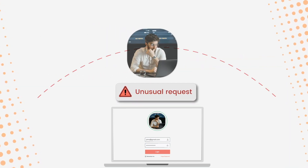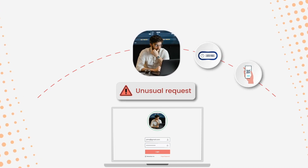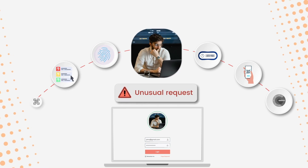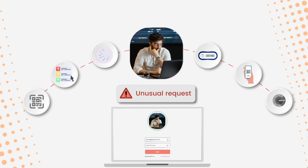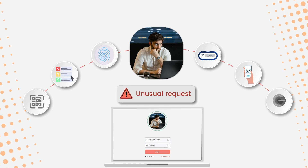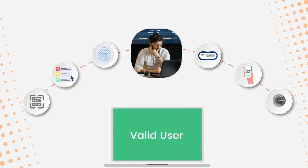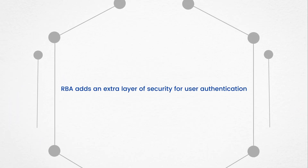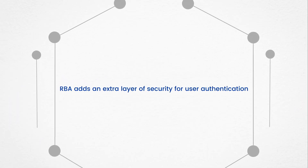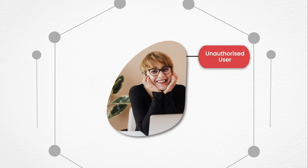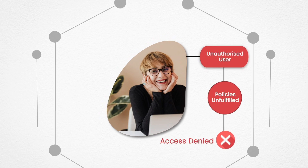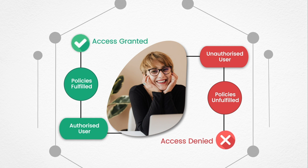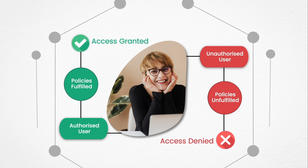In a scenario where the request seems unusual, the user is asked to undergo additional authentication steps to get access to the system. These supplementary authentication factors, such as biometrics, ensure that the request has come from a valid user. RBA adds an extra layer of security for user authentication to eliminate the risks of improper access and suspected login attempts, as it only allows authorized users based on the risk factors and policies set by the admin.